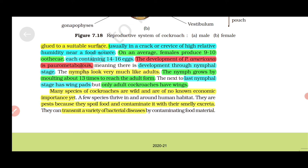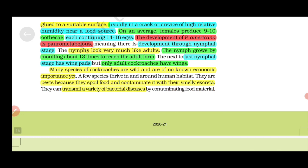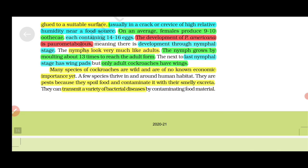The development of Periplaneta americana is paurometabolous, developing through a nymphal stage. The nymphs look very much like adults. The nymph grows by molting about 13 times to reach the adult form. The last nymphal stage has wing pads. Only adult cockroaches have wings. Many species of cockroaches are wild and of no economic importance, yet some are pests because they spoil food and contaminate it with their smelly excreta and transmit a variety of bacterial diseases.